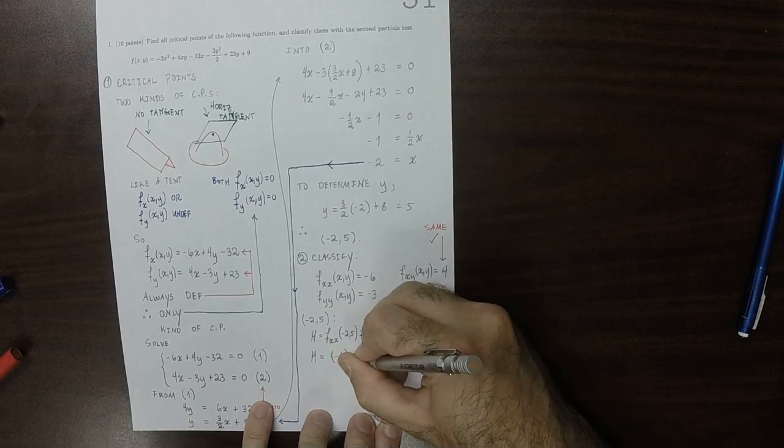So that the classifier h is, well, at negative 2, 5, the x, x partial is negative 6. The y, y partial is negative 3. And the x, y partial is 4, so 4 squared. Carrying out that arithmetic, well, that's 18 minus 16, which is 2, which is positive.